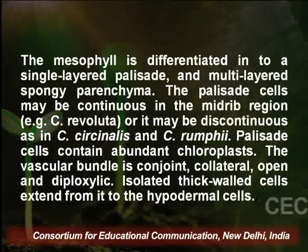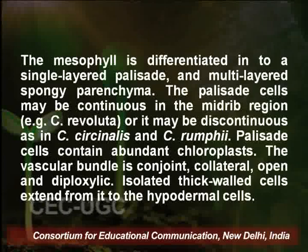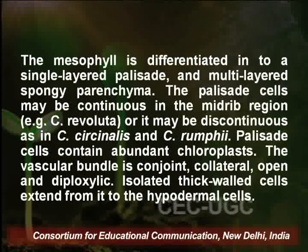Pellicid cells contain abundant chloroplasts. The vascular bundle is conjoint, collateral, open and diploxyleic. We can also see isolated thick-walled cells extending from it to the hypodermal cells. These cells are arranged at right angles to the longitudinal axis of the leaf and are present from the midrib till the margin of the leaflet. These are designated as accessory transfusion tissue and function as lateral conducting tissues. The endodermis is single-layered and sclerenchymatous, which encloses the vascular bundles. Phloem comprises of sieve tubes and phloem parenchyma.